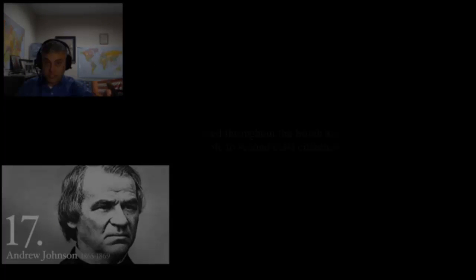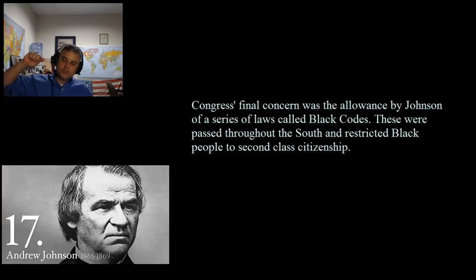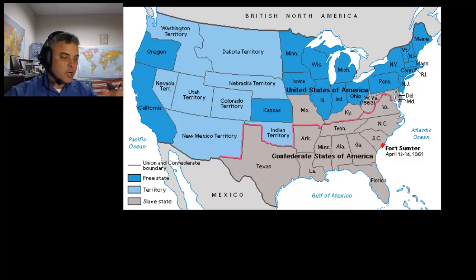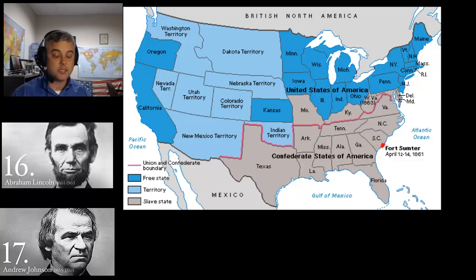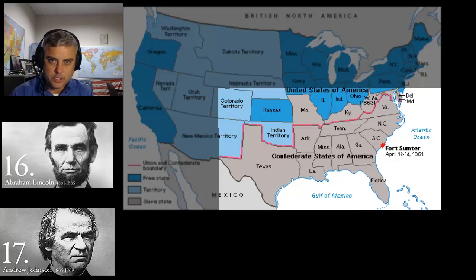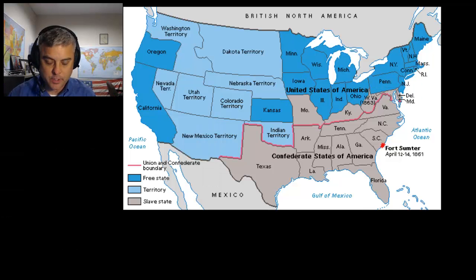Congress's final concern was the allowance by Johnson of a series of laws called the Black Codes, passed throughout the South, that restricted Black people to basically second-class citizenship. So that's basically it for Learning Objective 2. Under both Lincoln and Johnson, the main objective was to bring the South back into the Union as seamlessly as possible. In Learning Objective 3, we're going to look at Congressional Reconstruction's pushback against Lincoln and then Johnson, and how Congress was able to take over the process of Reconstruction for a number of years.